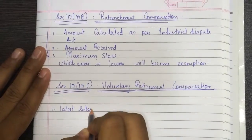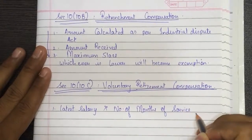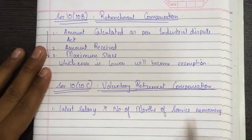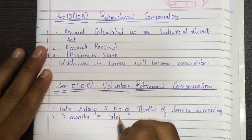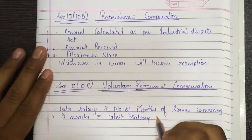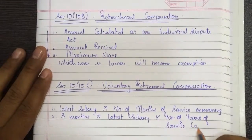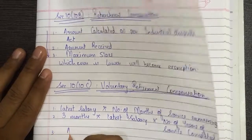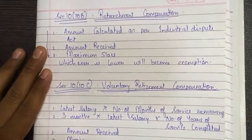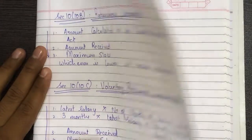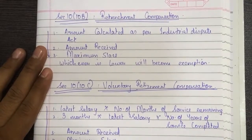The exemption for voluntary retirement compensation is the lowest of four amounts: first, latest salary multiplied by number of months of service remaining; second, three months multiplied by latest salary multiplied by number of years of service completed; third, the amount received; and fourth, a maximum of five lakhs. Whichever is lower becomes the exemption. All these figures will be given in the question.